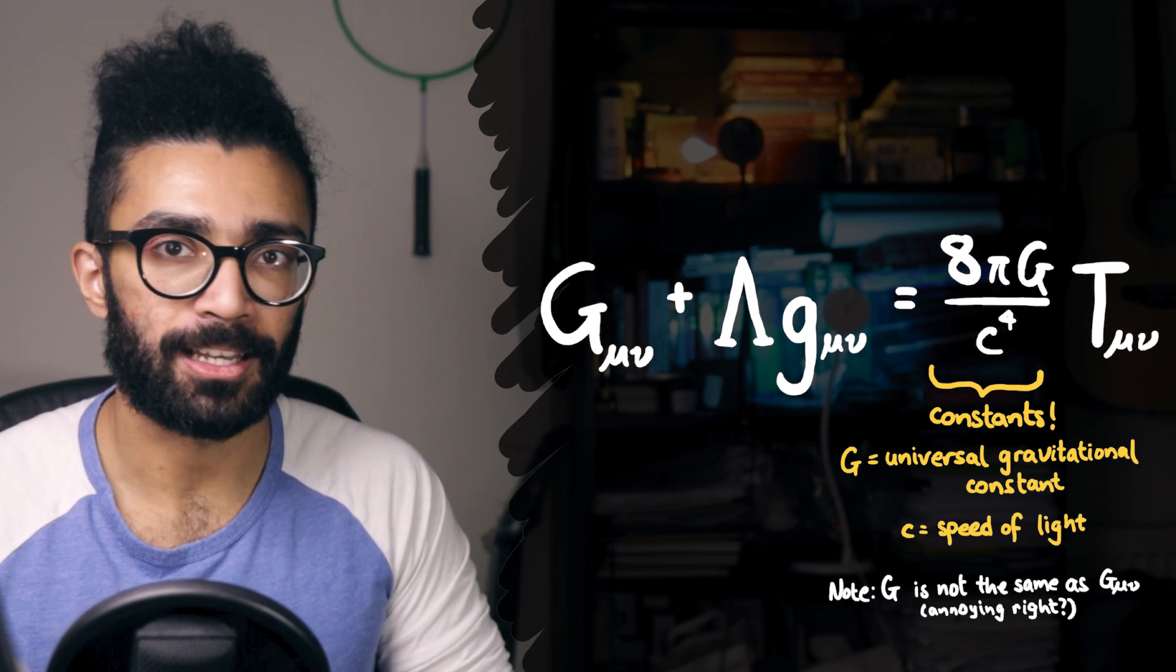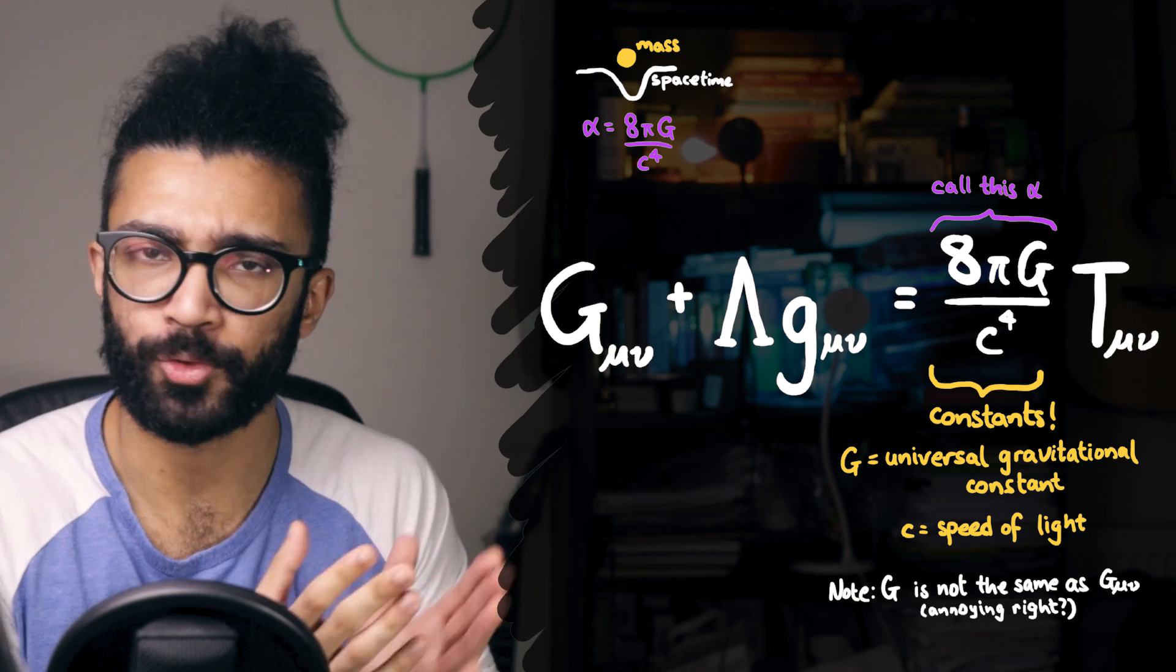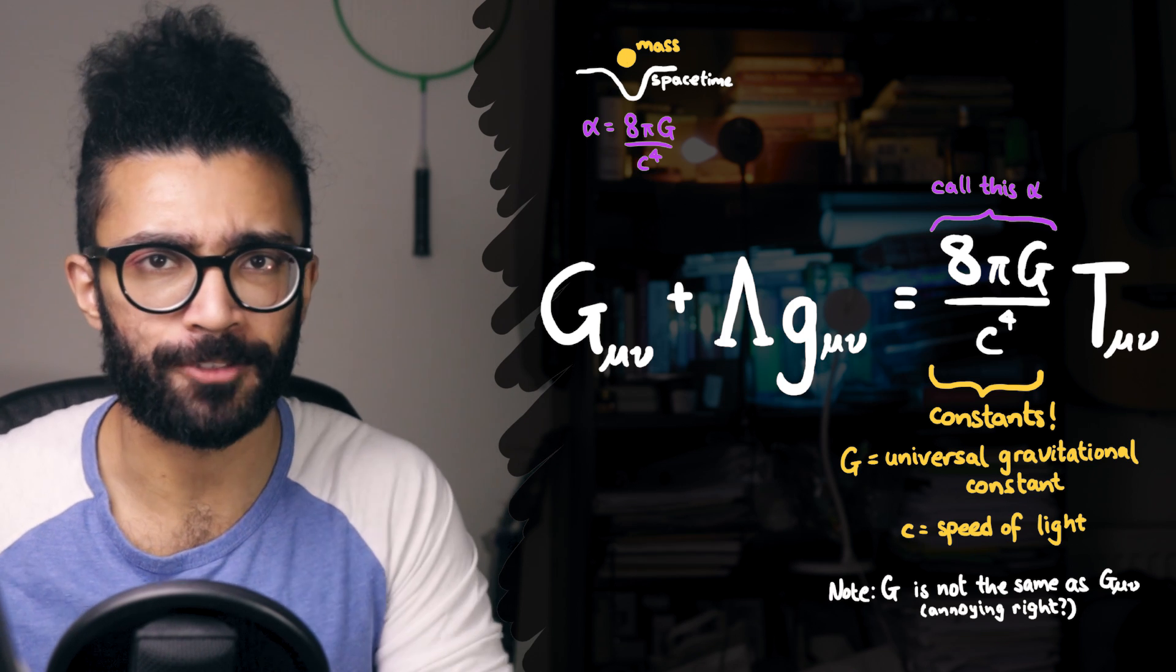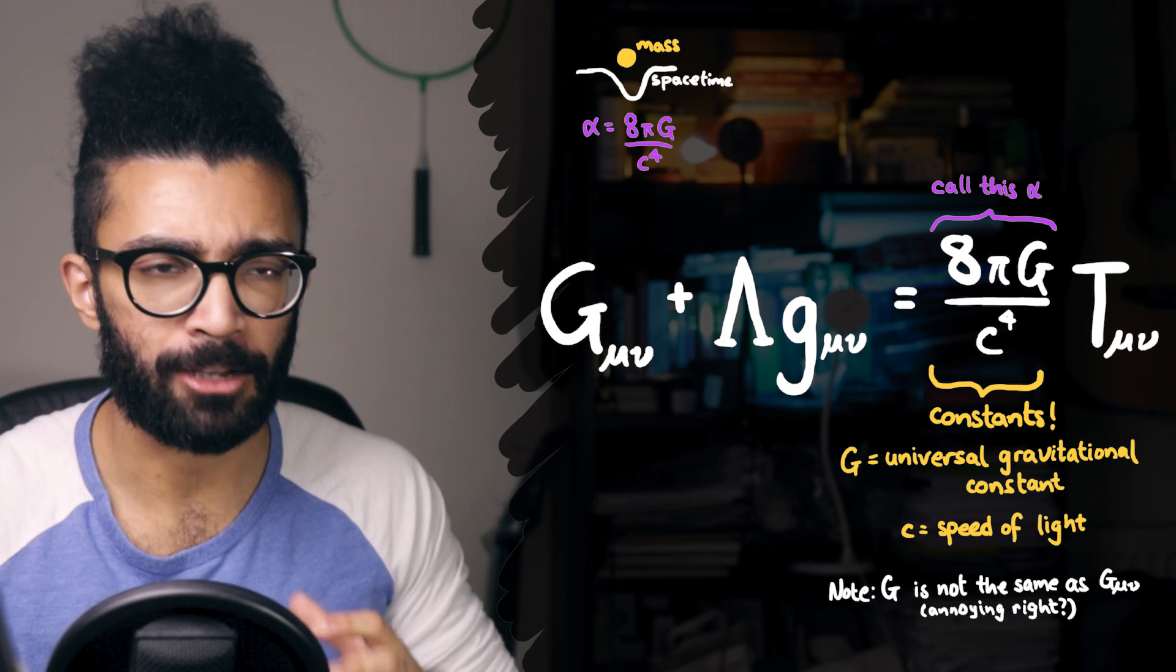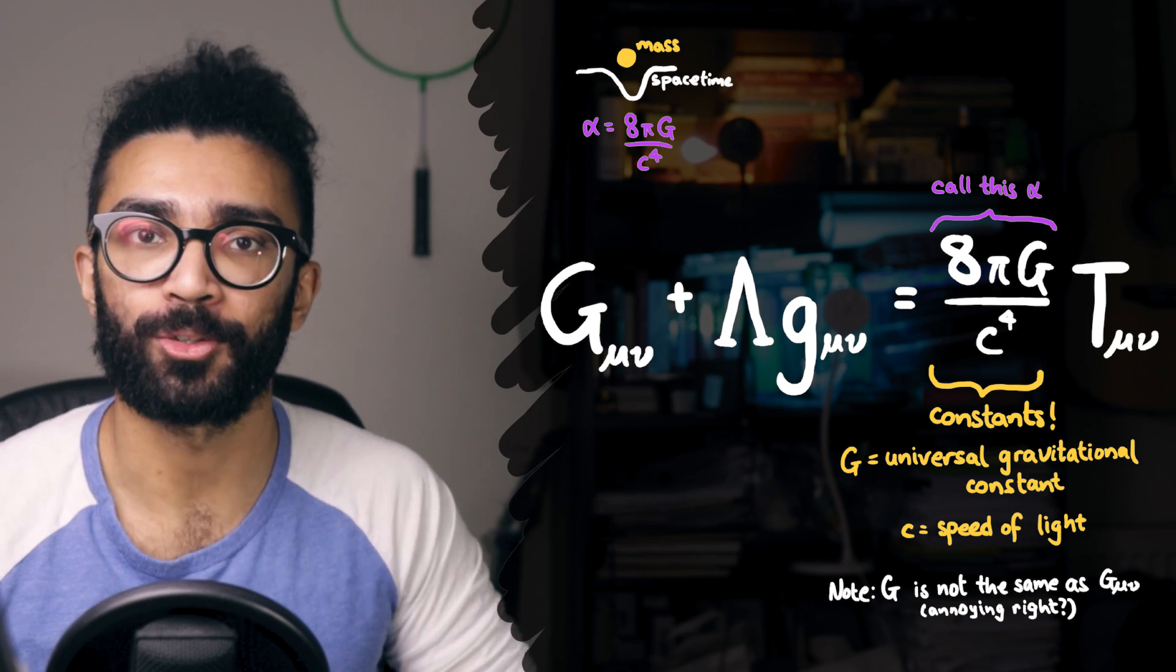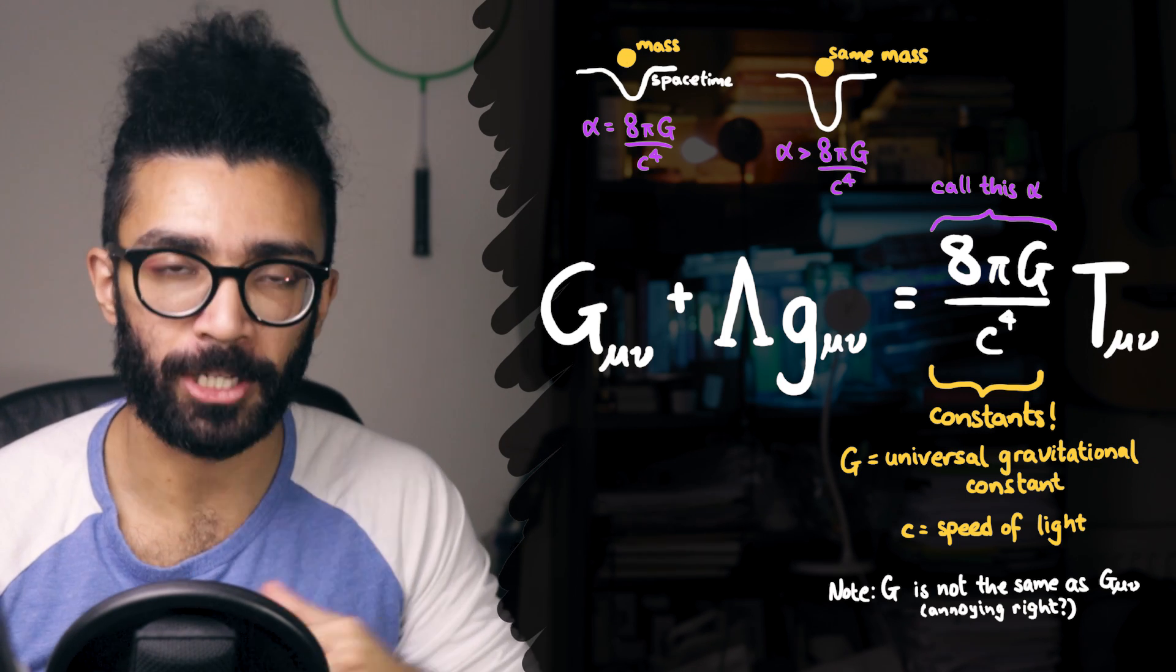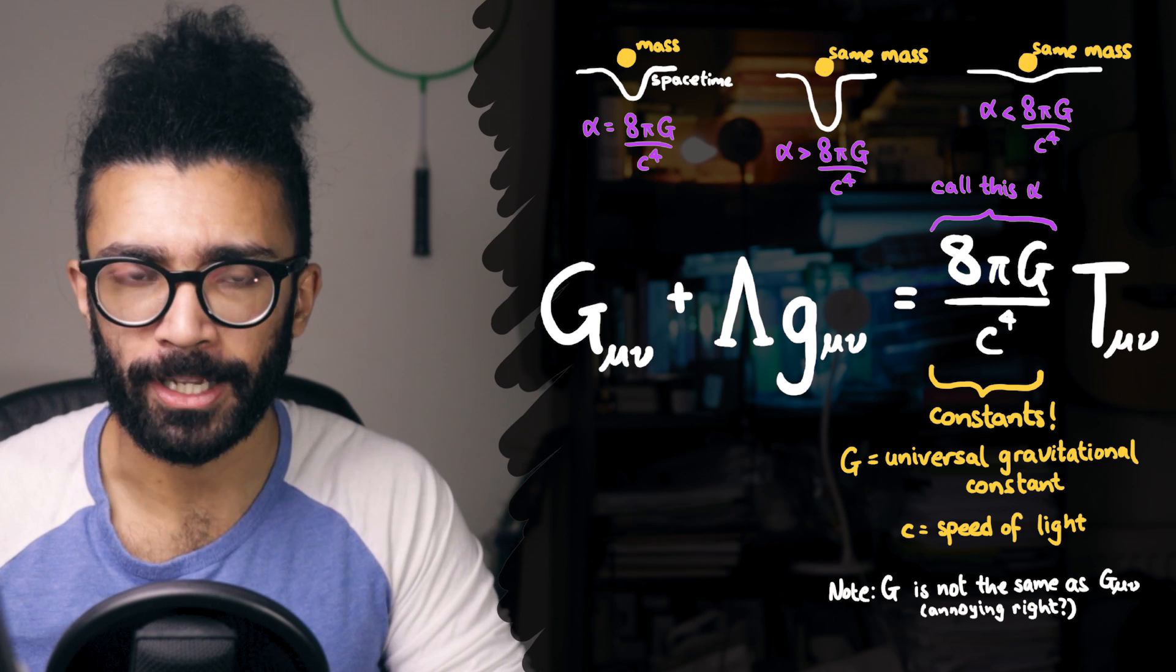These constants basically tell us exactly how much mass or how much energy or how much whatever in the stress-energy tensor is needed in order to create a particular warping of spacetime. They can be thought of as the coupling constants. They essentially tell us how strong the effect mass or energy has on the warping of spacetime. If this constant was bigger, then we would see more warping of spacetime for the same amount of mass.